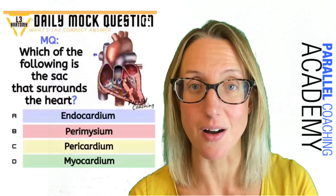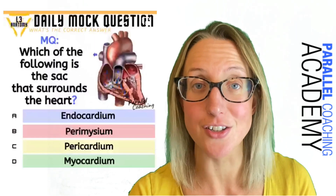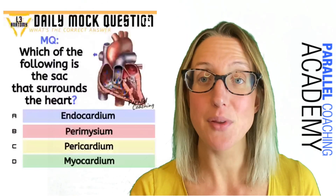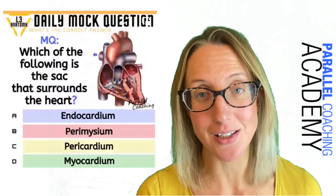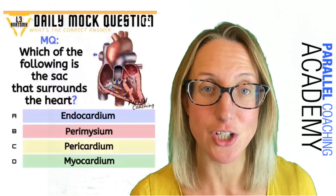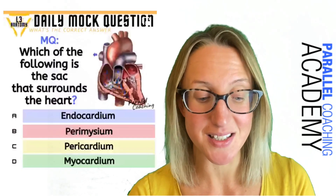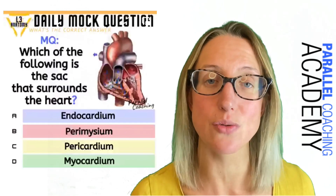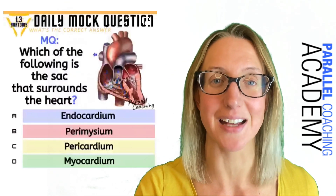This mock question says: 'Which of the following is the sac that surrounds the heart?' This is a typical level 3 anatomy and physiology mock question. Cover up the answers so you can't see them and just read the question. Remember the steps: cool calm and collected, take a breath, read the question — is this something you want to answer now, or would you rather wait? If you decide to go for it within your minute, let's look at the answers. The keywords here are: sac, around, and heart.